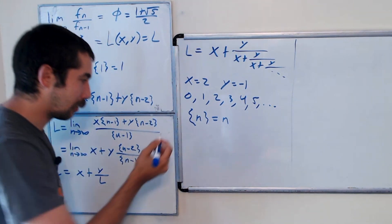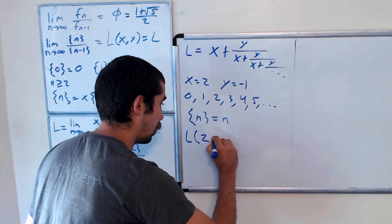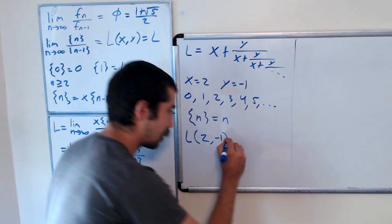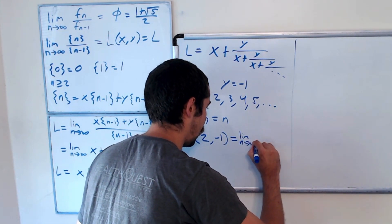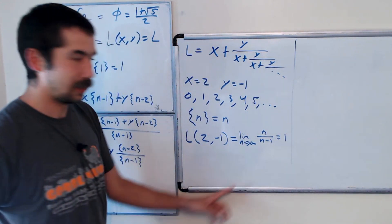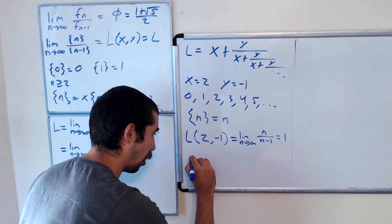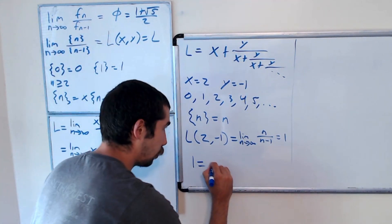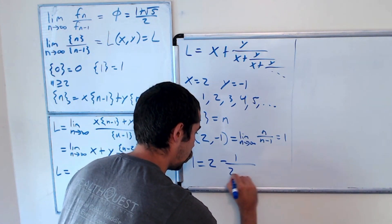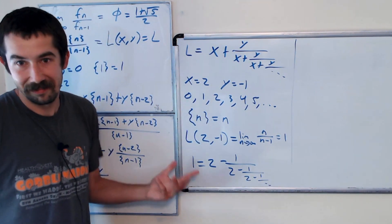And so if we look at L of 2, negative 1, this limit, well that's just the limit as n goes to infinity of n over n minus 1, which is equal to 1. And so using this continuous fraction, we have a new way to write 1. 1 is equal to 2 minus 1 over 2 minus 1 over 2 minus 1 over and so forth. I thought that was pretty neat.